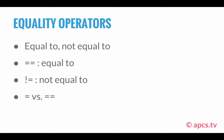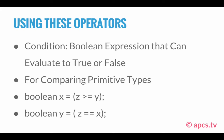Now let's look at the use of these operators in programs. A condition is a Boolean expression that can evaluate to true or false — that's when you have a condition, and this is where those operators are primarily used. They're used in conditions where true or false is returned, and they're used for comparing primitive types like integers and doubles. For example: boolean x equals (z >= y). The expression z greater than or equal to y is a conditional — if z is greater than or equal to y, it returns true and the Boolean variable x will be true.